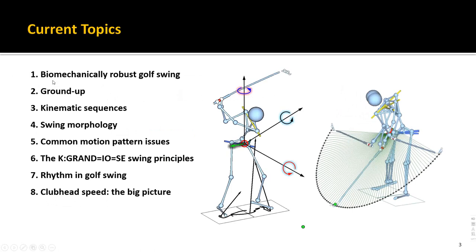The first topic is a biomechanically robust golf swing. The second is ground up. Then kinematic sequences. Swing morphology — that means the shape of the swing. And the commonly observed motion pattern issues in golf. Number six is the K-Grandiose swing principles. And then two relatively new ones: rhythm and golf swing, and club head speed — the big picture. So currently I have these eight lectures done.